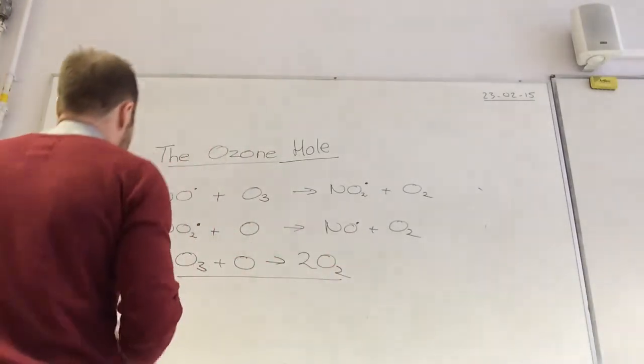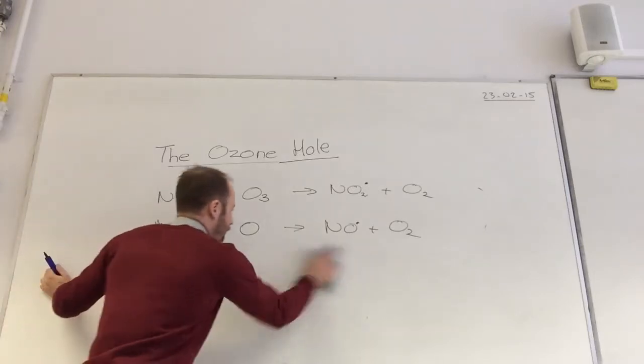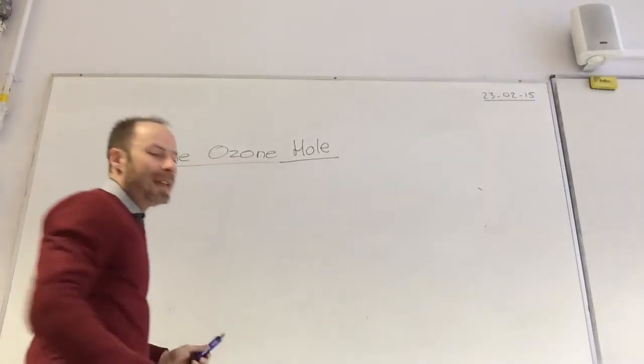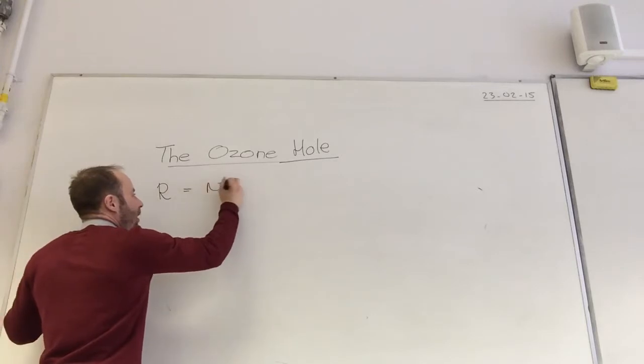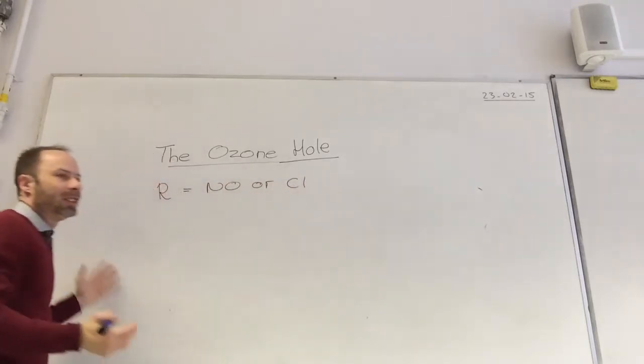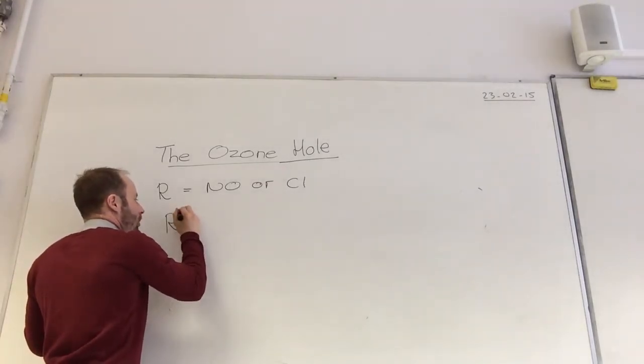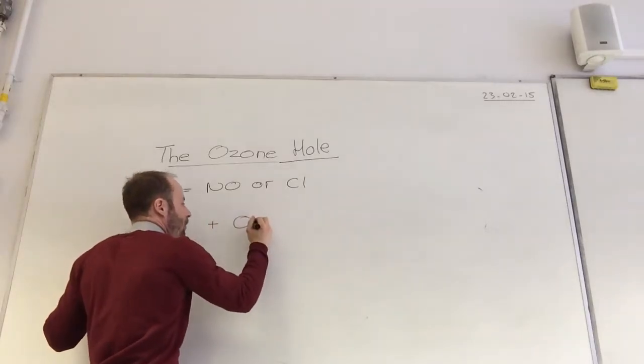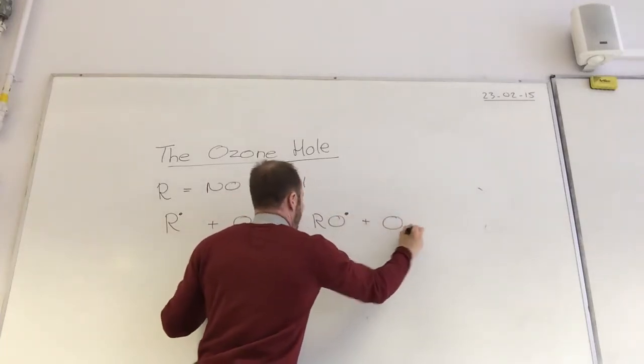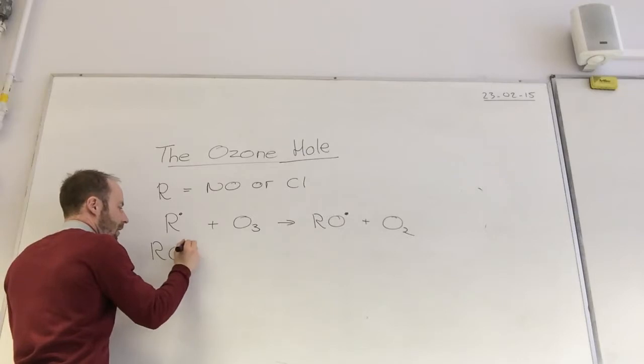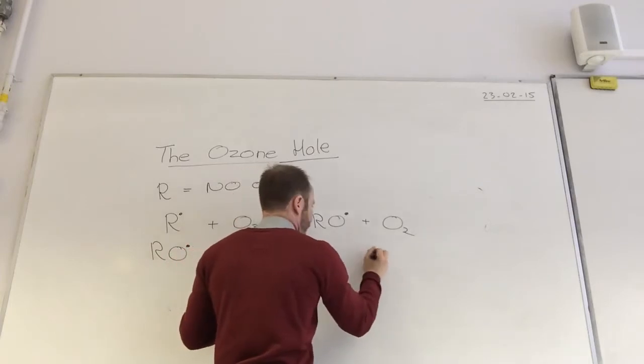So if I do a general equation, which is relatively easy. So if we say that R is equal to NO or Cl, doesn't matter. The way you do it is R dot comes along with ozone to make RO dot plus O2. And then RO dot plus O gives me R dot plus O2.